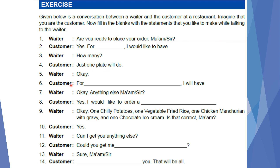Customer continues: 'For main course, I will have vegetable fried rice and chicken manchurian with gravy.' Waiter: 'Ok, anything else, sir?' Customer: 'Yes, I would like to order a dessert — one chocolate ice cream.' The waiter repeats the order: 'One chili potato, one vegetable fried rice, one chicken manchurian with gravy, and one chocolate ice cream. Is that correct, sir?' Customer: 'Yes.' Waiter: 'Can I get you anything else?' Customer: 'Could you get me a bottle of mineral water?' Waiter: 'Sure, sir.' Customer: 'Thank you, that will be all.'